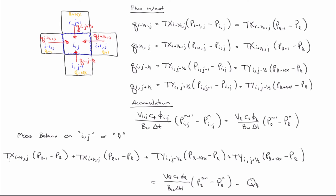So again, so this is what's coming into the block from the left. This is what's coming into it from the right. This is what's coming into it from the bottom, from the top. This is the accumulation. This is sources or sinks.